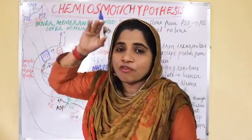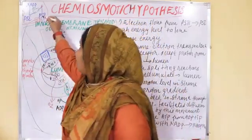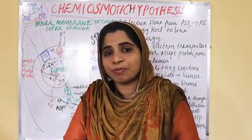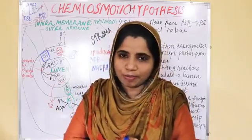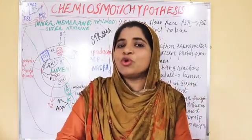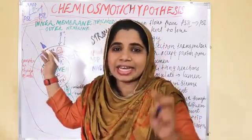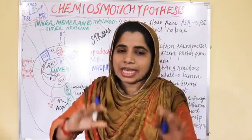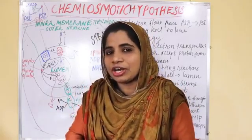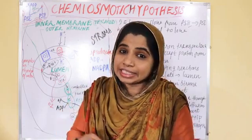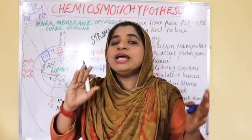Electron transport chain: electrons move from Photosystem 1 to Photosystem 2, then to NADP. Here you can see electron transport. Electrons transfer from Photosystem 2 to Photosystem 1 via an electron carrier — cytochrome. The cytochrome, during electron transport, accepts protons.